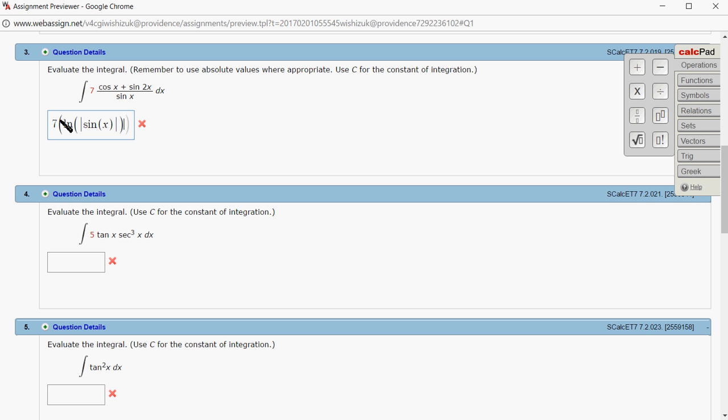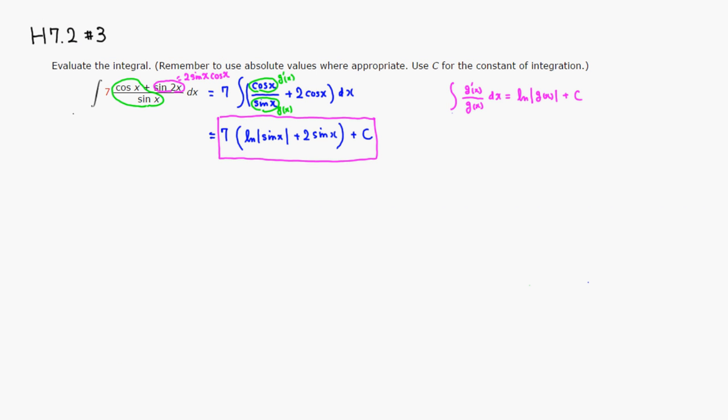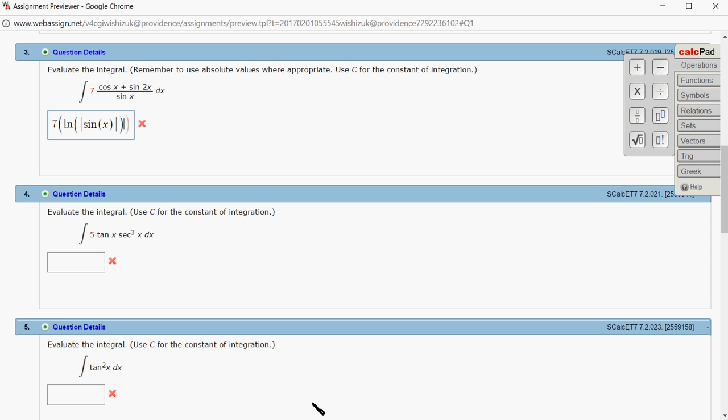It was actually - what was it, minus? Let's see, a plus, sorry, plus. 2 sine of x plus some constant C.